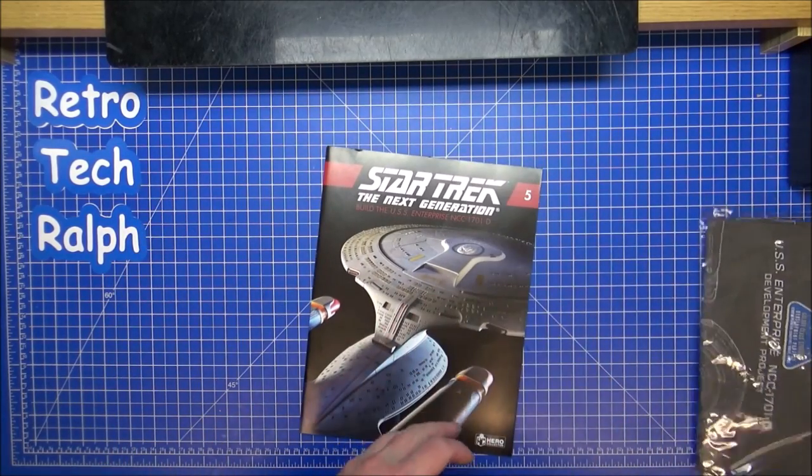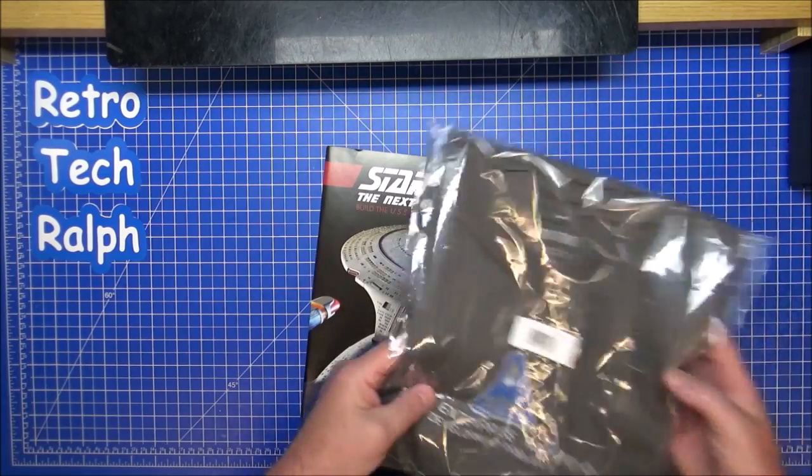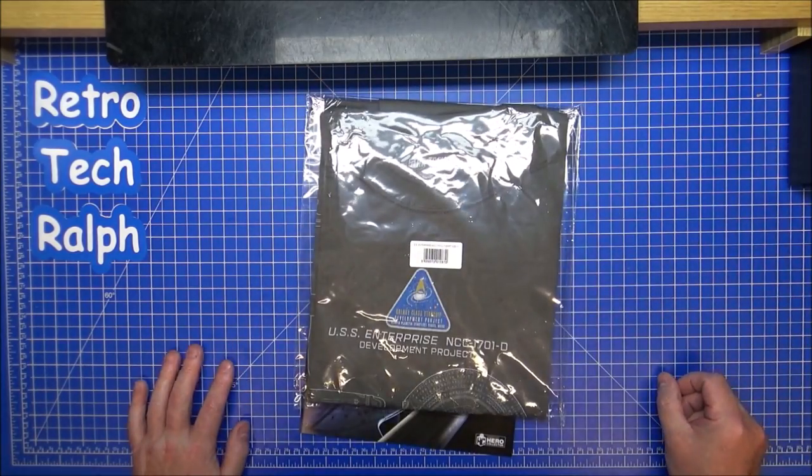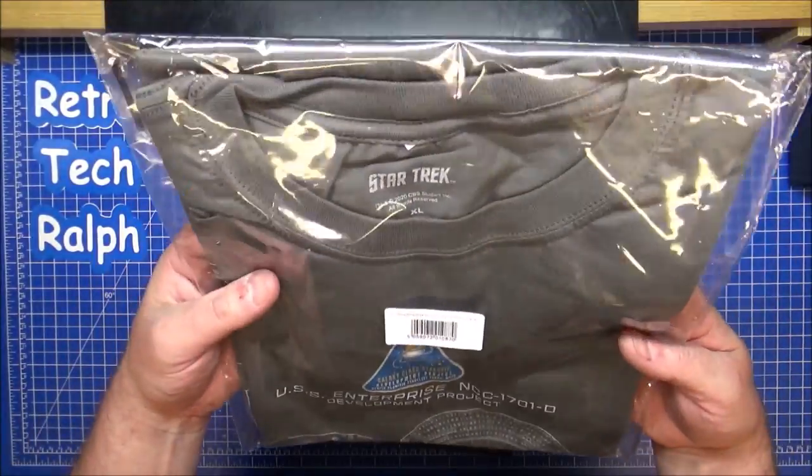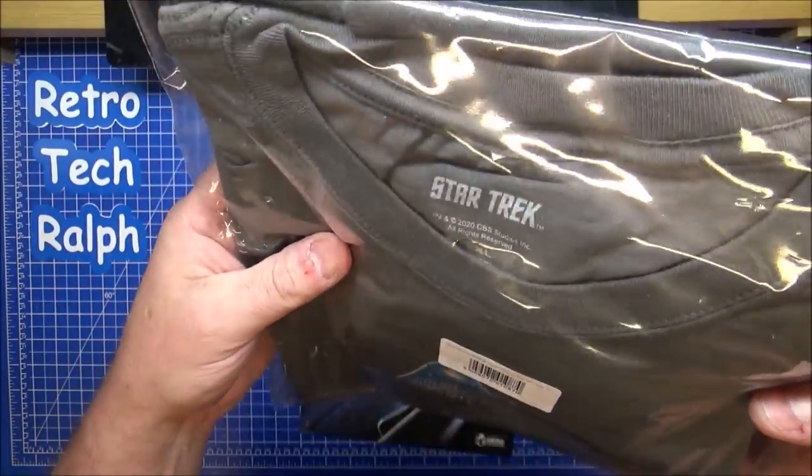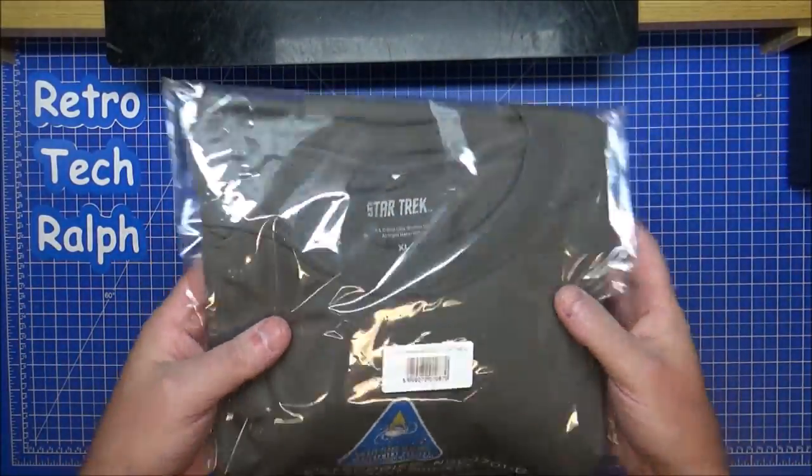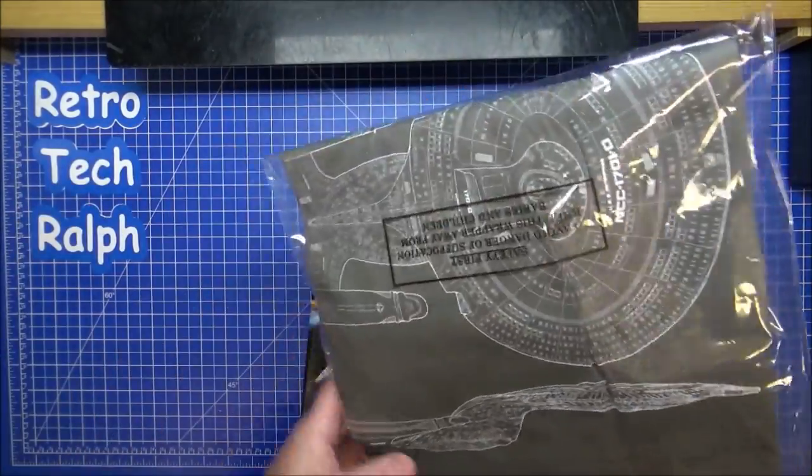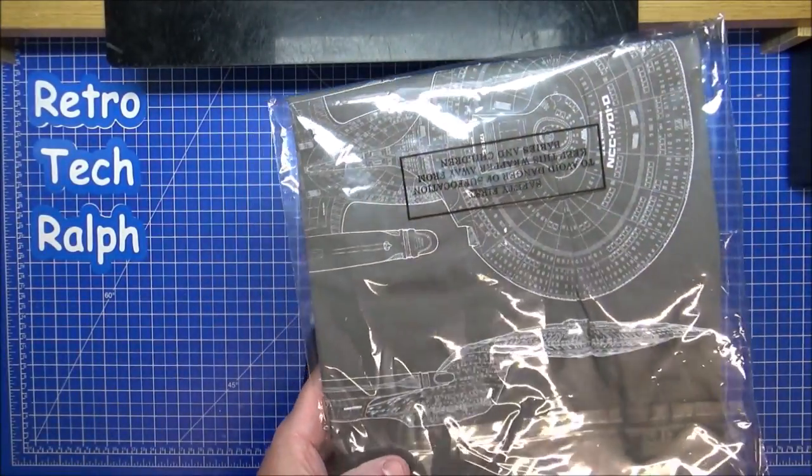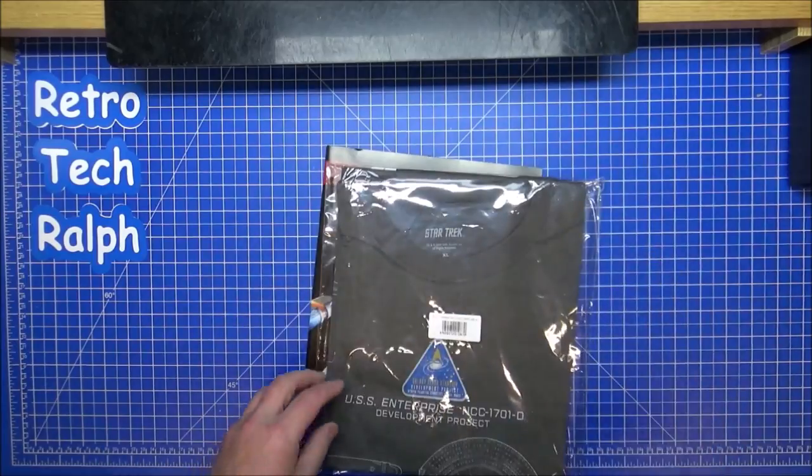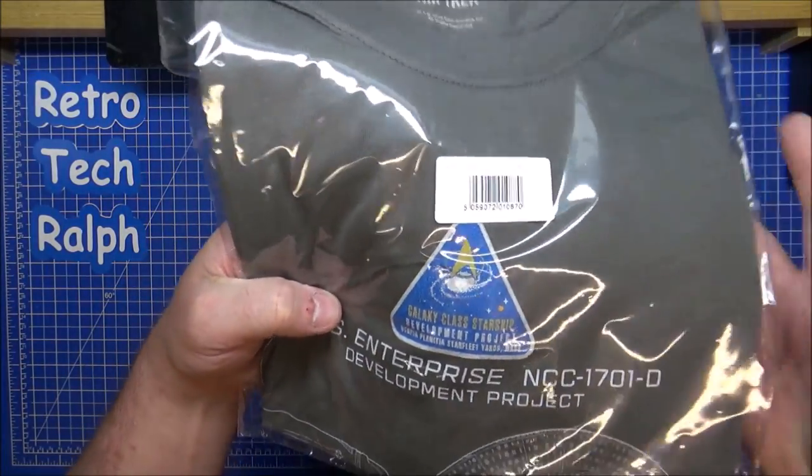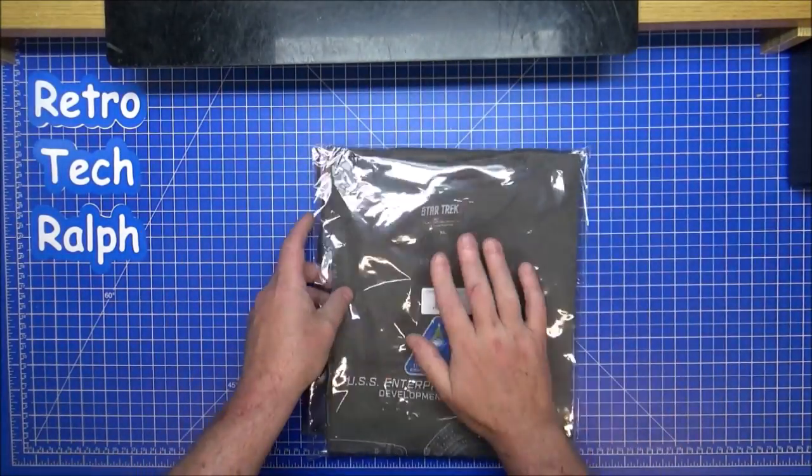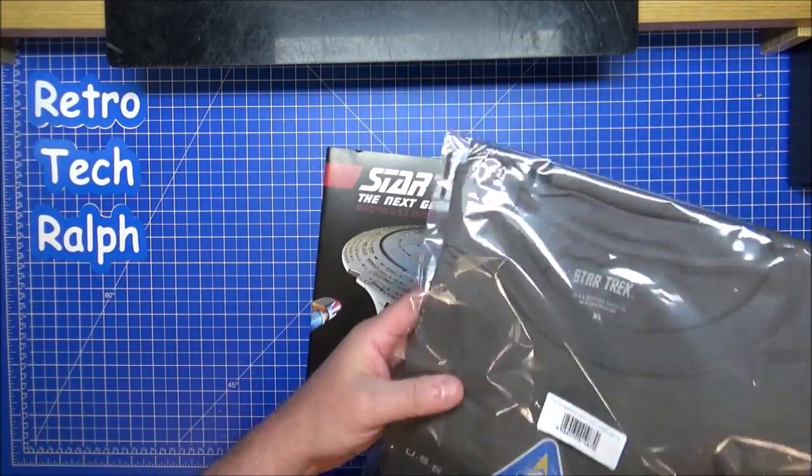Now, we're going to have a quick look through. Got a freebie with this one. This is the YouTube Panacea Galaxy Class Project t-shirt, extra large. Unfortunately I may not fit in this, but it's nice to see. Quite a nice little t-shirt. This is one of the freebies you get with this set.